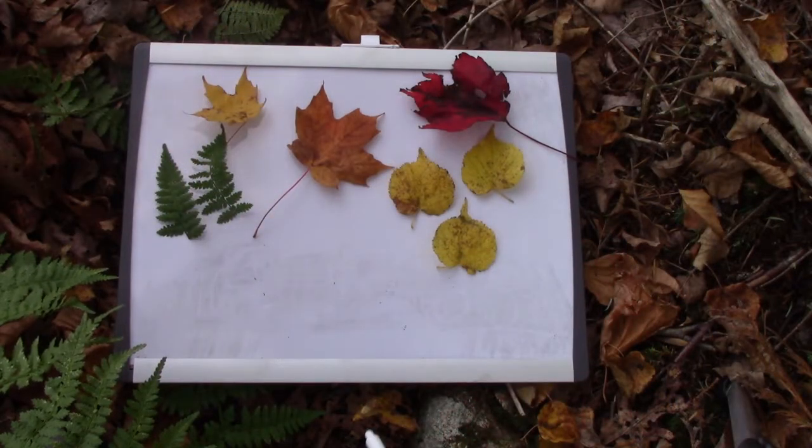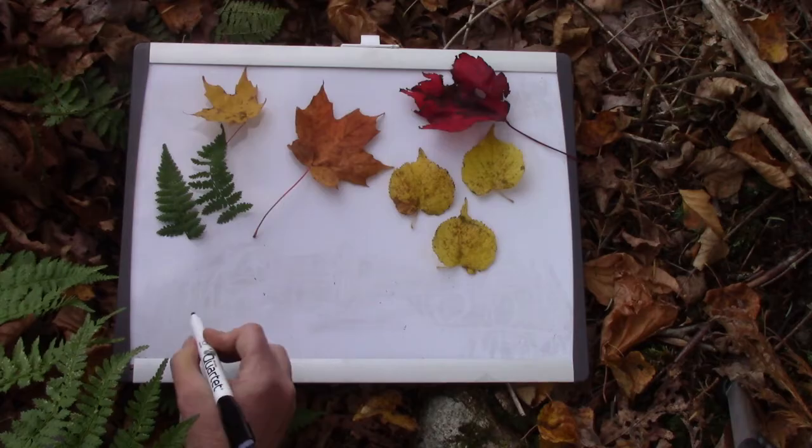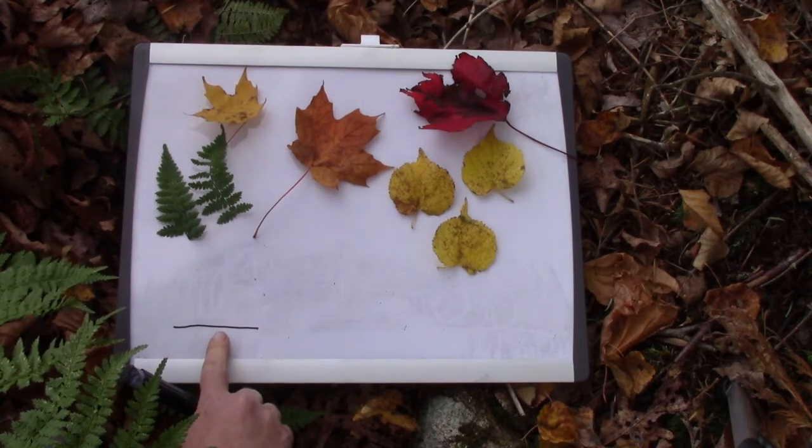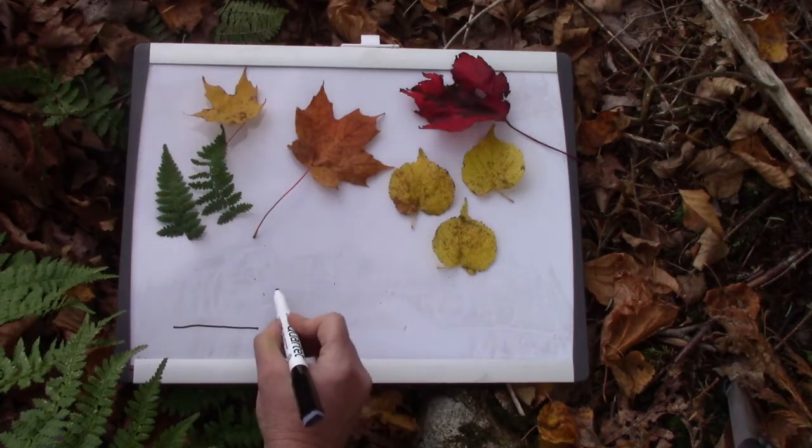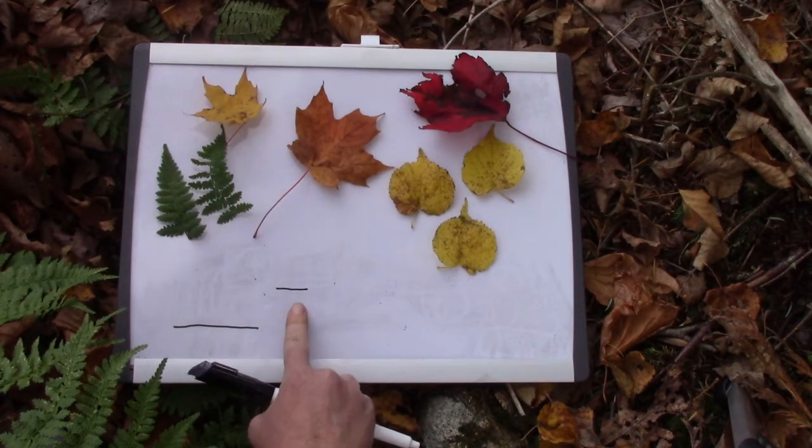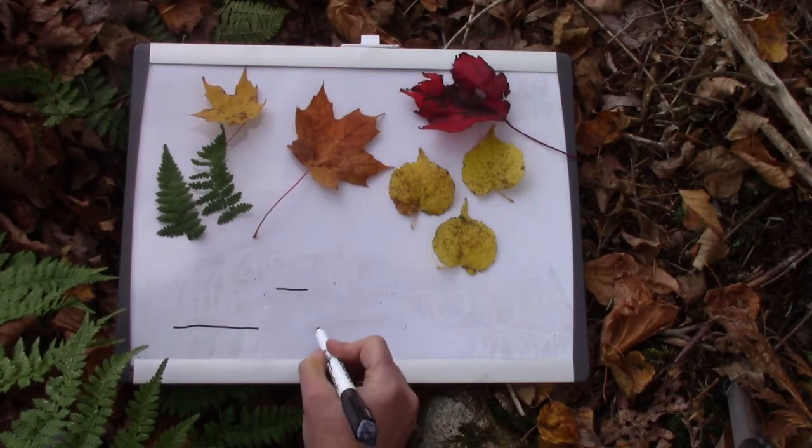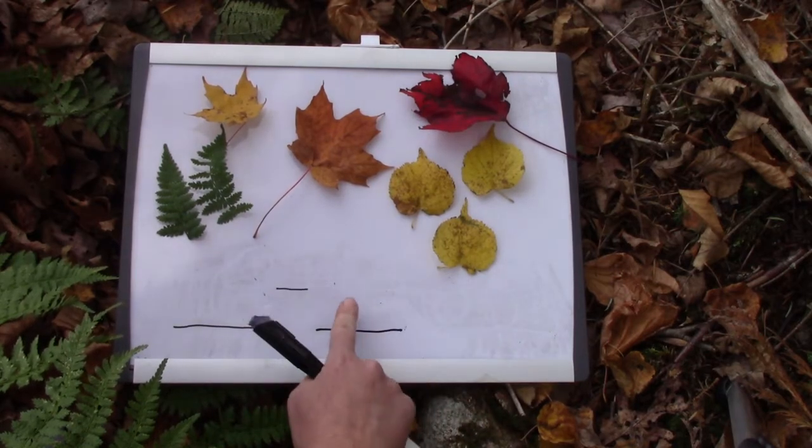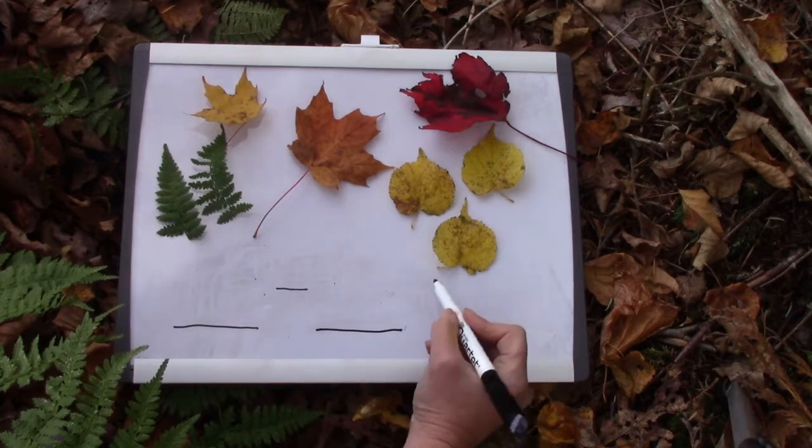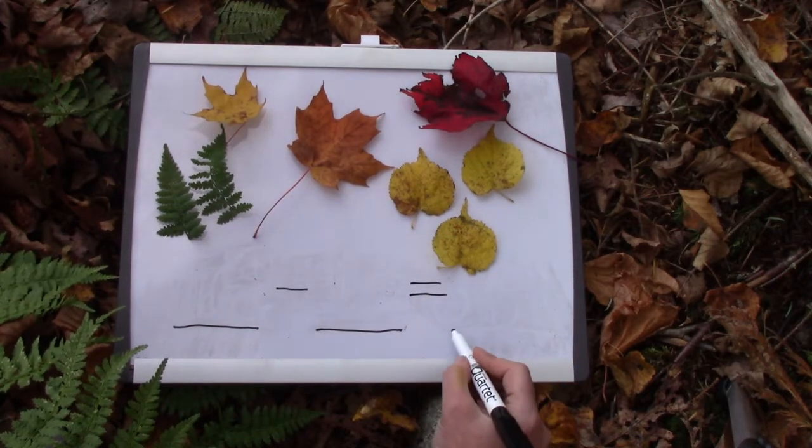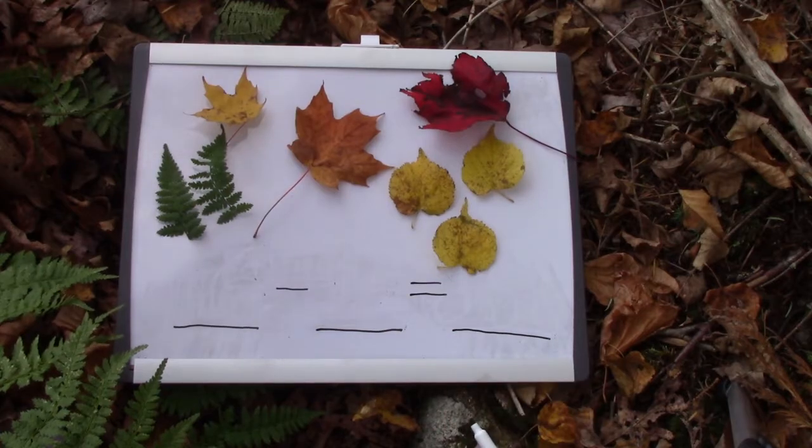Class, today we are writing some and some went away stories. We are going to be writing how many we have, then our minus or subtraction symbol, then how many went away, then our equal symbol and how many we have left. Well, let's start.